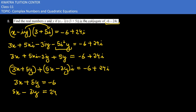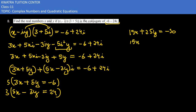Now let's simplify this. We can use the elimination method or substitution method, but elimination is easier here. Let's multiply the first equation by 5 and the second equation by 3, because we need to eliminate one variable. Multiplying gives us 15x plus 25y equals minus 30, and 15x minus 9y equals 72.